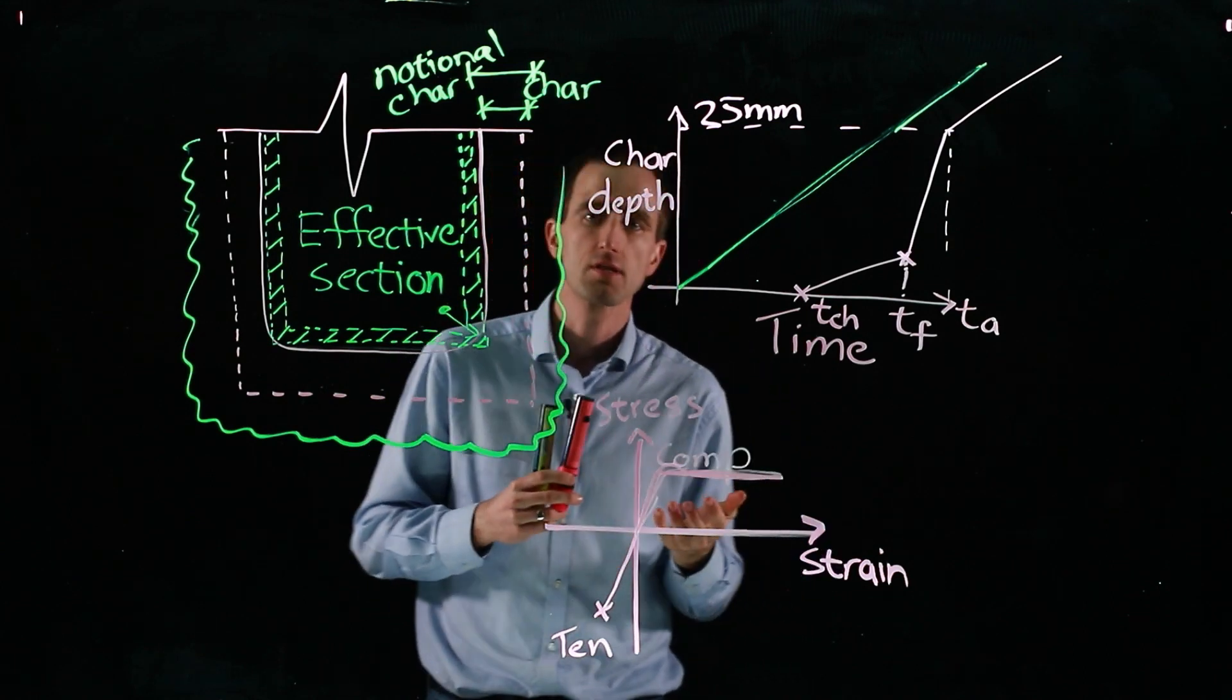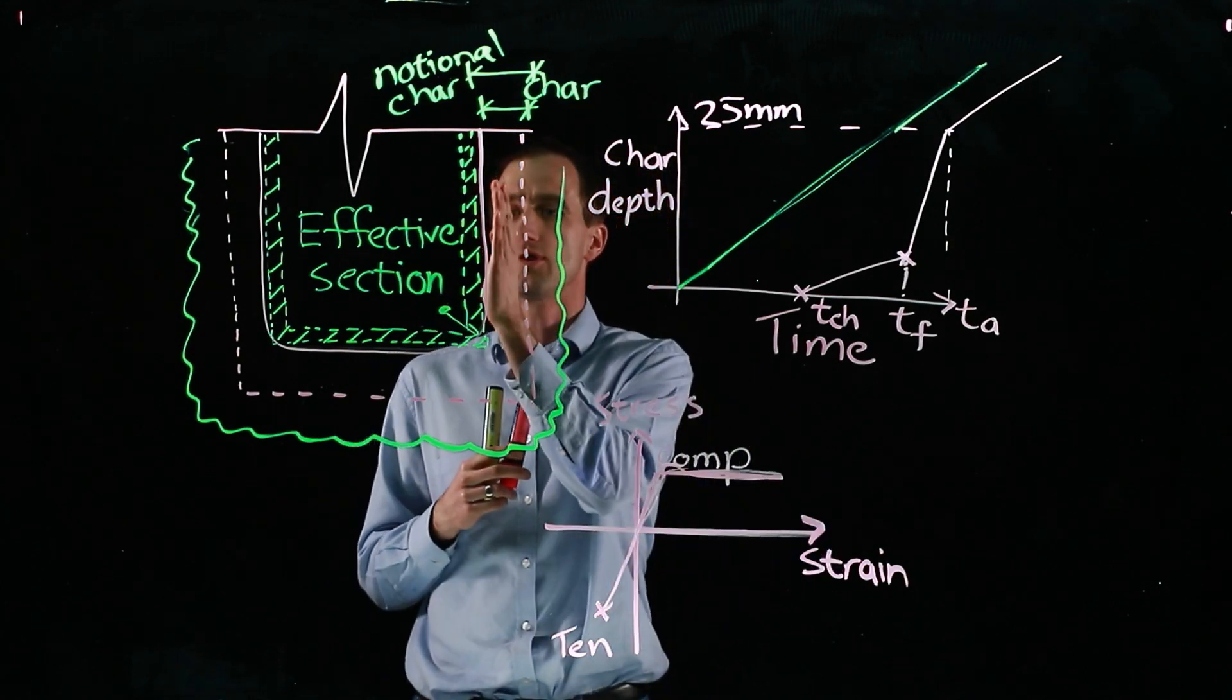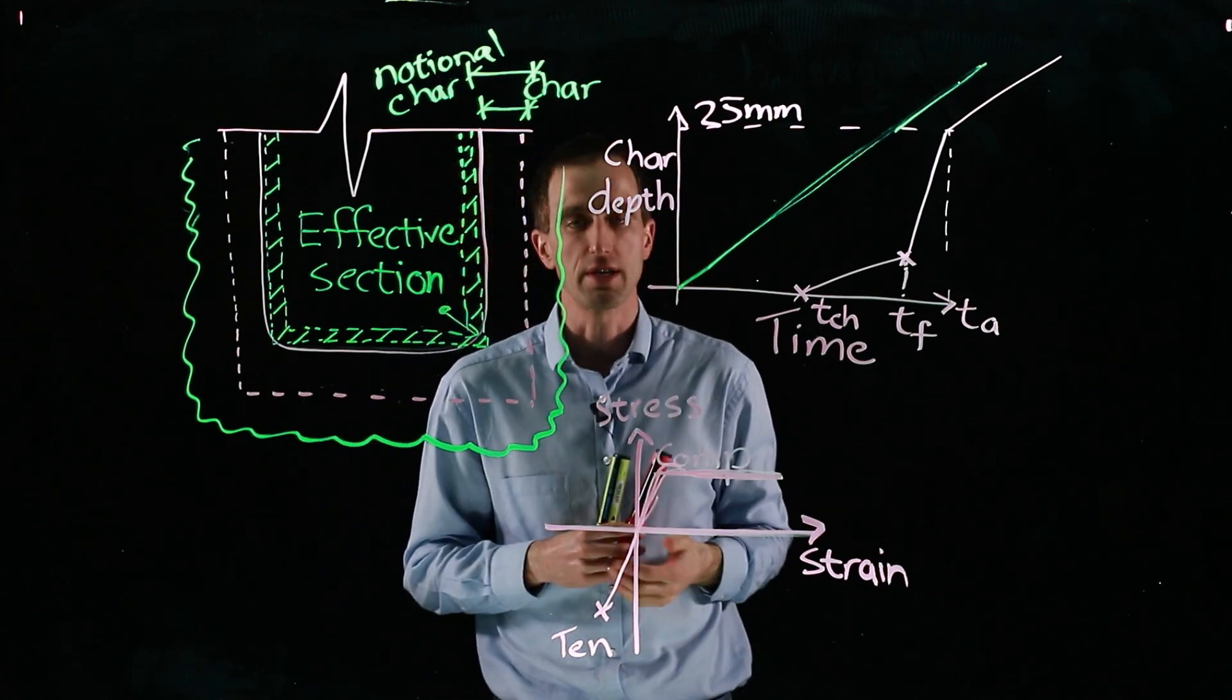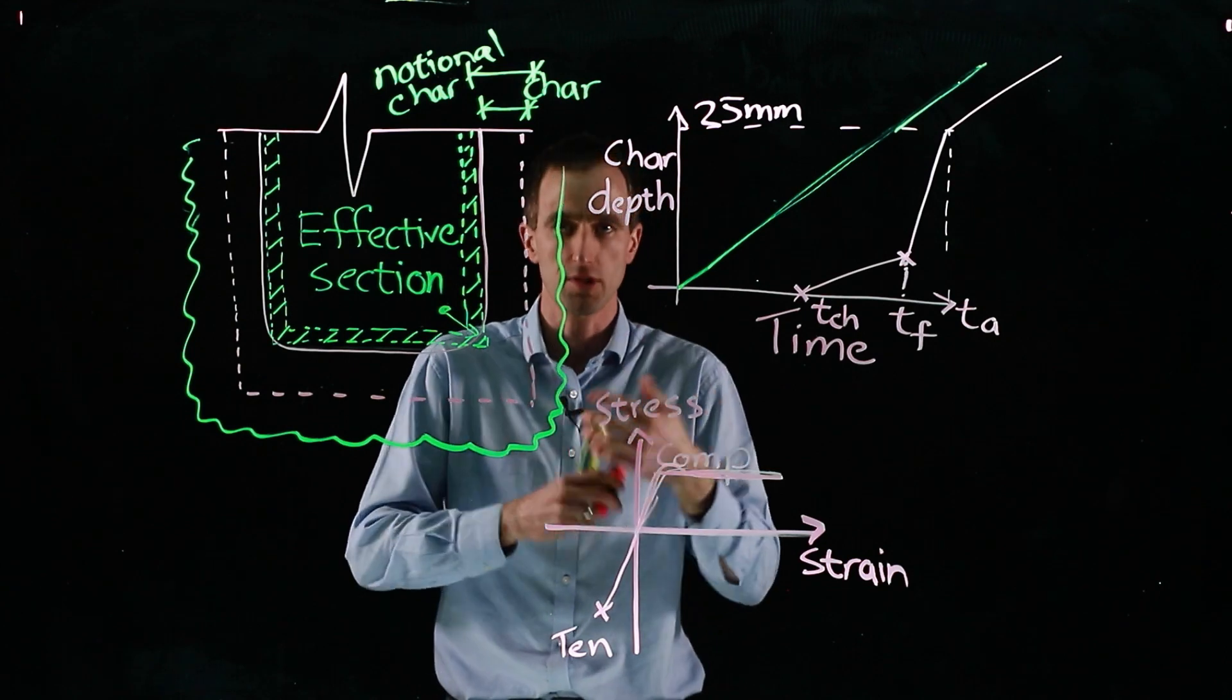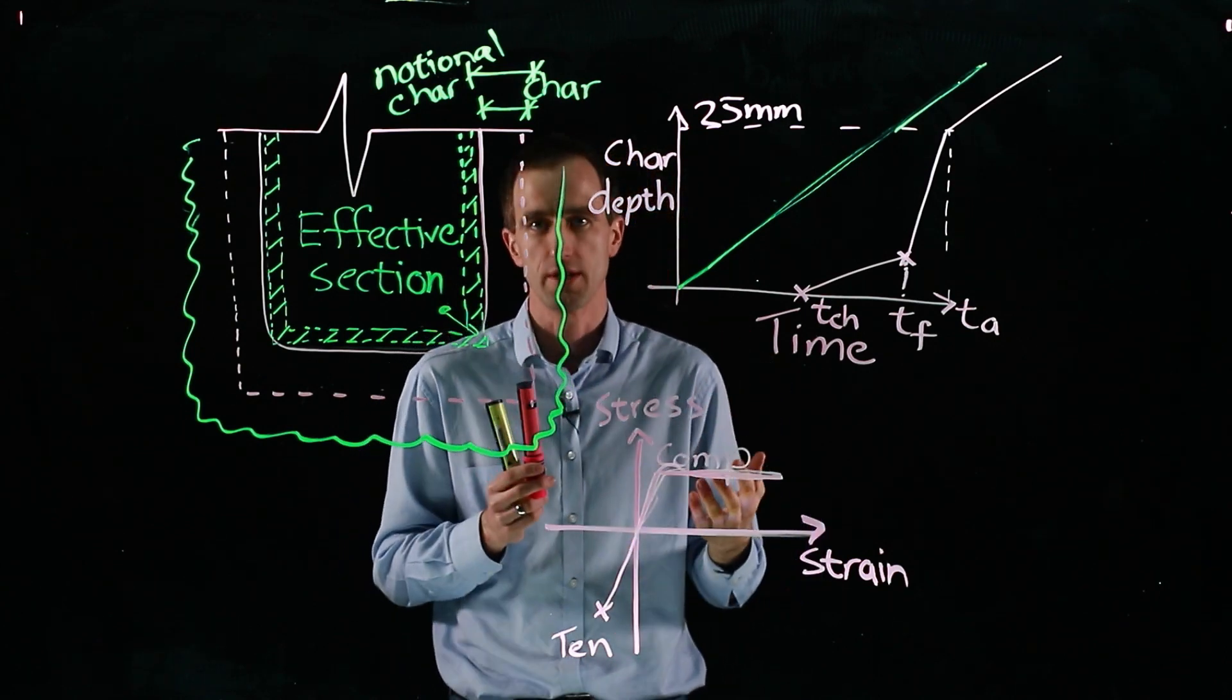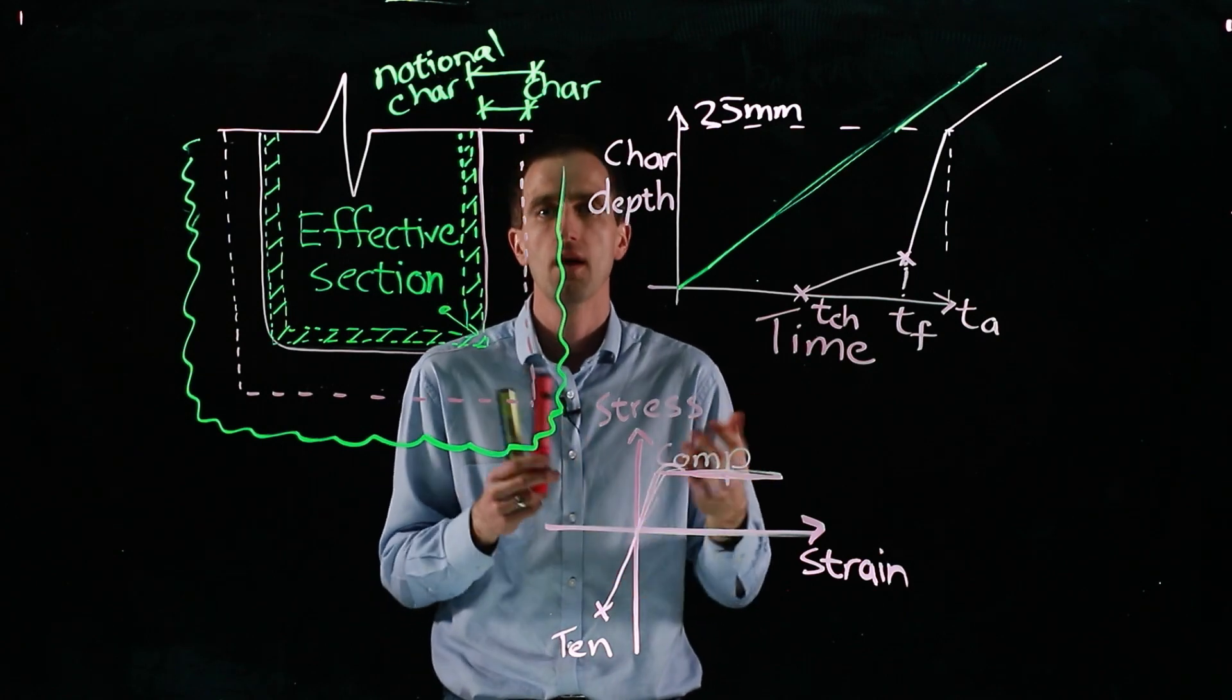So that gives us an overview of designing timber beams for fire. Charring is very important. We get our compressive and tensile resistance, we apply that all together. And then finally we can come up with the bending resistance or the compression resistance of our section. Thank you very much.